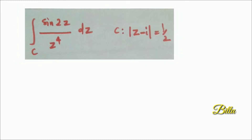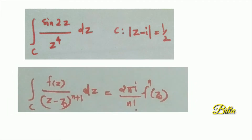Next, evaluate the integral over C of sin(2z) by z⁴ dz, where C is |z − i| = 1/2. Clearly C is a circle with center i and radius 1/2. The given function is sin(2z) by z⁴. Clearly 0 is the only singular point, and the singular part is 1/z⁴ with power 4. Since the singular point 0 lies inside C, we can apply Cauchy's Integral Formula for derivatives.